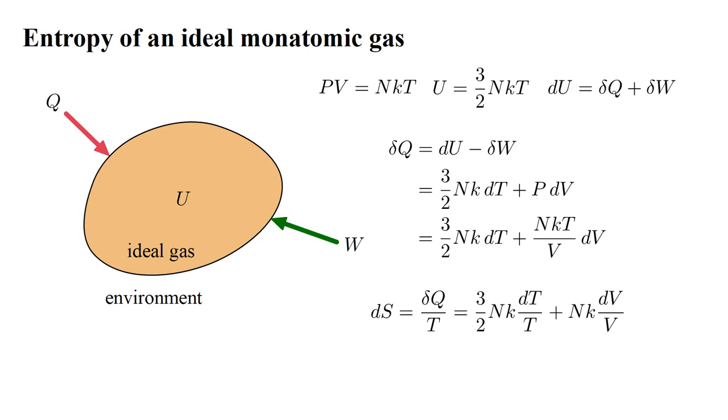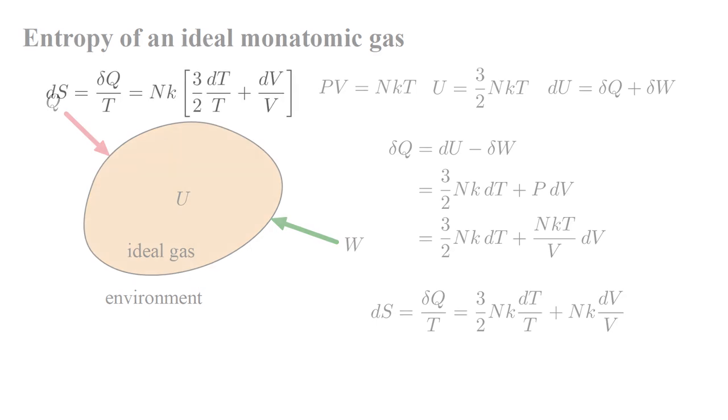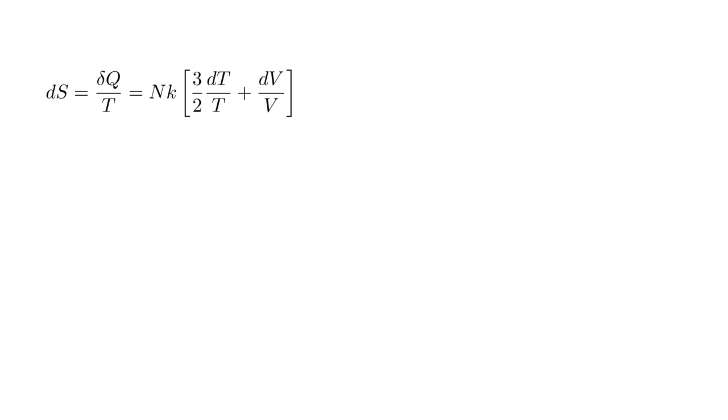This is equal to, on the right, three-halves NK dT over T, plus NK dV over V. Factoring out a common NK, this leaves dS equals NK times the quantity three-halves dT over T, plus dV over V.